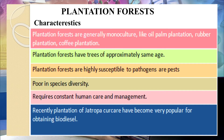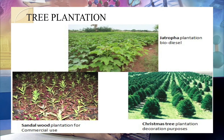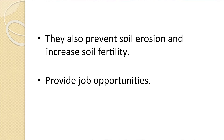These are common characteristics of any man-made ecosystem — poor species diversity, require human involvement. Recently, plantation of Jatropha has become very popular for obtaining biodiesel. Tree plantations are raised for fruit oil, rubber, coffee, timber, firewood, and pulpwood for making rayon, synthetic fiber, and paper industries. The pictures show three types of plantation: Jatropha, sandalwood, and Christmas trees for various commercial purposes, as well as Casuarina plantation as windbreakers. All these plantations help in preventing soil erosion, increase soil fertility, and provide job opportunities.